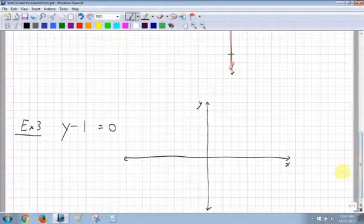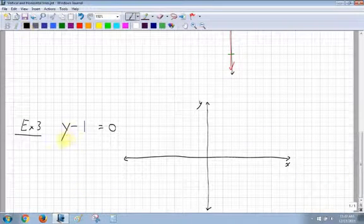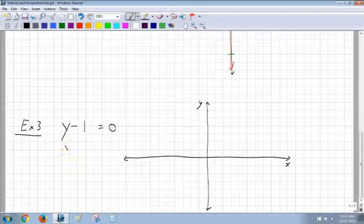For the last example, I'm going to look at a y equals. So y minus 1 equals 0. What I'm going to do is add 1 to both sides, so I end up getting y is equal to positive 1.